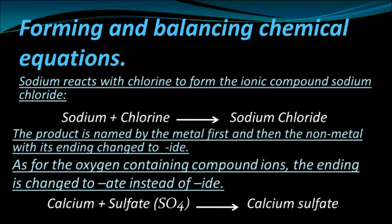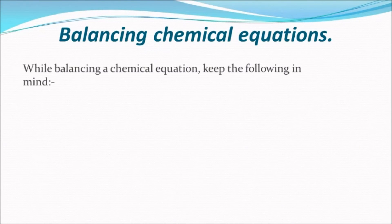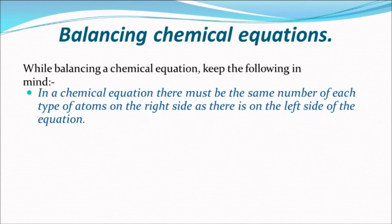Balancing chemical equations: atoms can't be created or destroyed. This means that in a chemical equation, there must be the same number of each type of atom on the right side as there is on the left side.